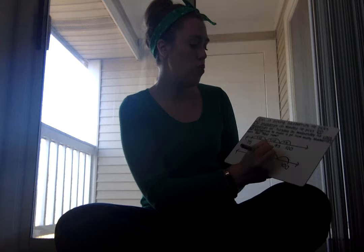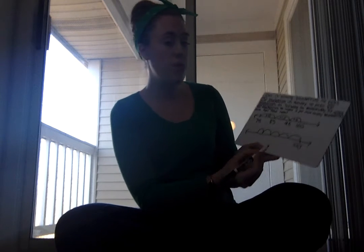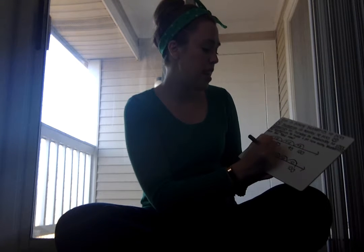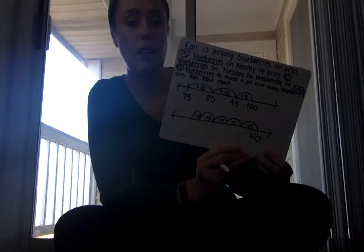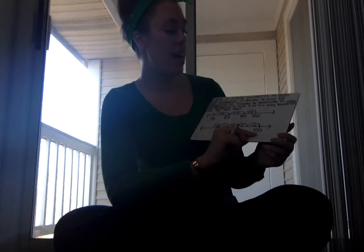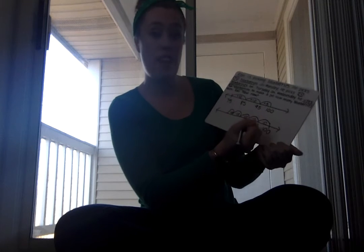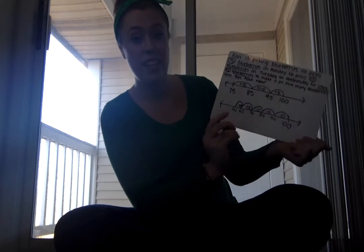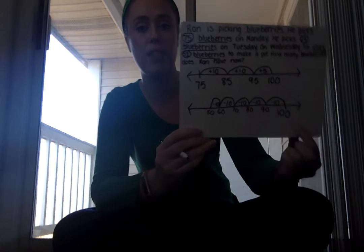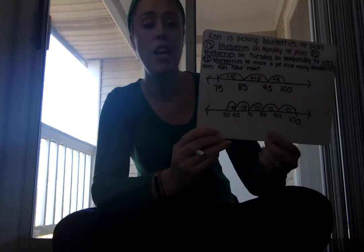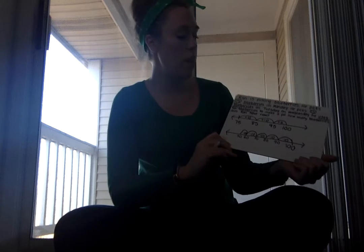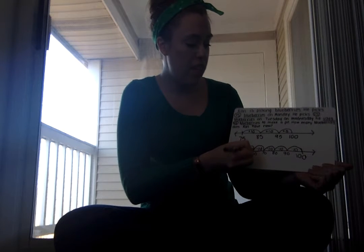Starting at 100, I make 5 backward jumps of 10, labeled minus 10 each time: 100 → 90 → 80 → 70 → 60 → 50. This is where skip counting skills become really important. He used 51 blueberries, not just 50, so I need one more backward jump of 1. I was at 50, and 50 − 1 gets me to 49 blueberries.